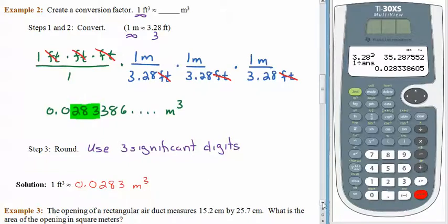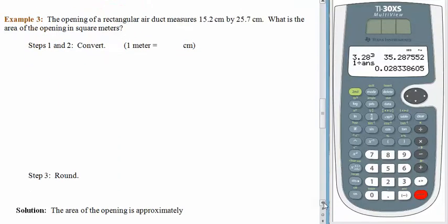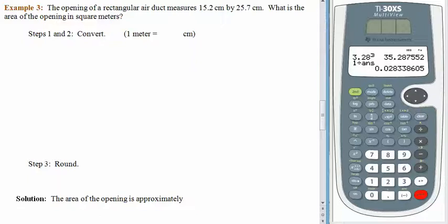We have a rectangular air duct measuring 15.2 centimeters by 25.7 centimeters. And we would like to find the opening in square meters. What's the area of the opening in square meters? And the first thing we need to know is how many centimeters are in a meter. And hopefully you already know this. You should know that there are 100 centimeters in a meter. But otherwise, let's just start. In order to find area, we have to multiply the length by the width. So we have 15.2 centimeters multiplied by 25.7 centimeters. Don't multiply that yet. Save all the rounding for the end. But that's our initial area, and so we'll put it over 1.